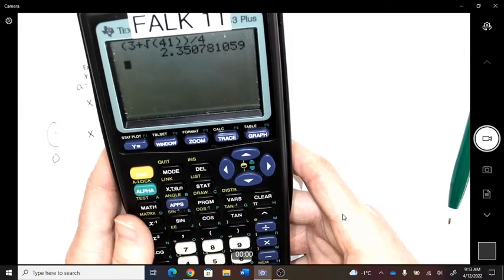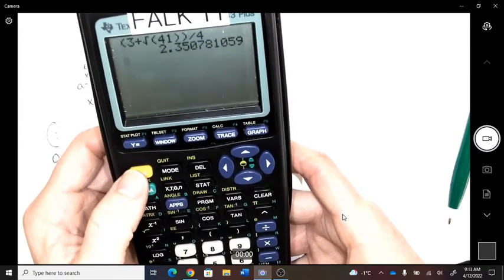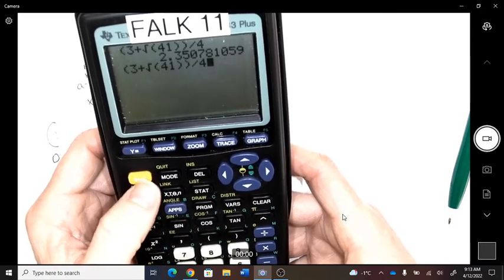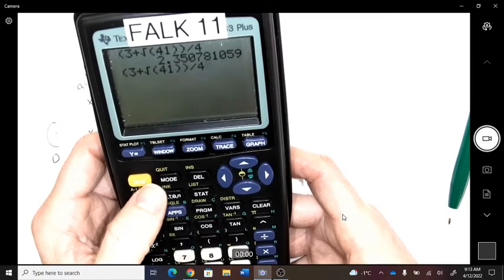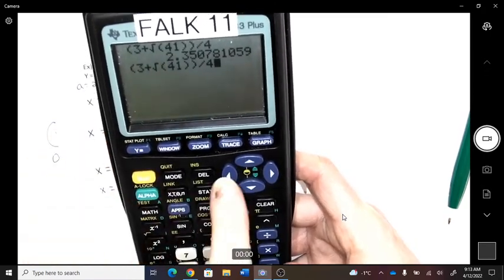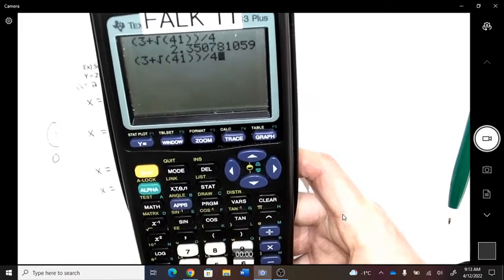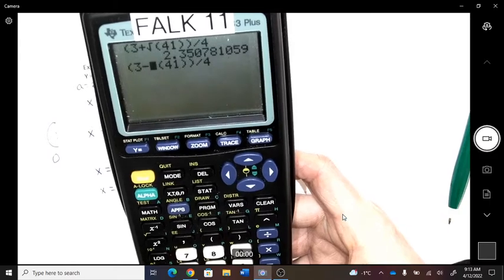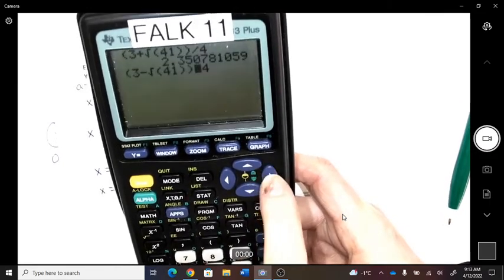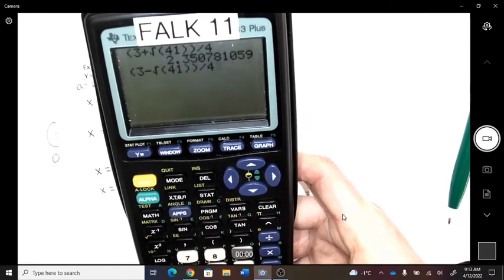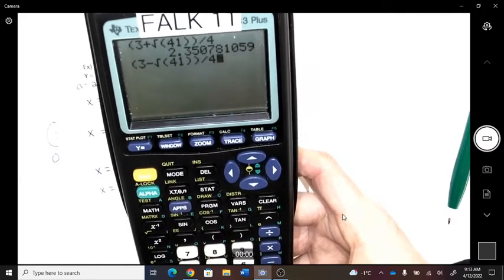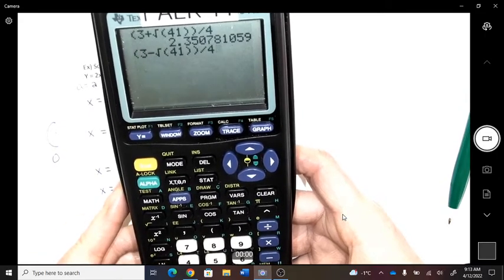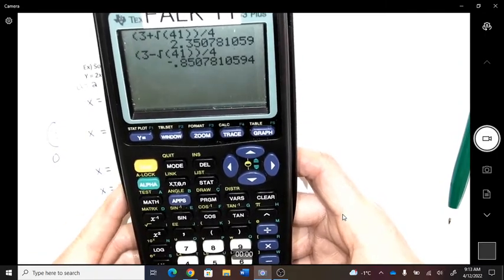Okay, you ready? I'm going to hit second enter. Second enter and guess what it does? It brings back whatever I did last up. See how it brings it all back up again? And now I'm going to go over and that plus I'm going to hit subtract. So that saved me from typing it all again. So second enter on your calculator will bring something back for you. Okay, and now this time negative .85.